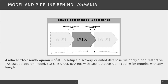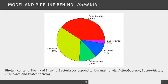A second important point is that there is no assumption about the length of the toxin or antitoxin genes. Tasmania is based on EnsemblBacteria, a repository of annotated assemblies from different sources. The genomes in the database correspond to four main phyla: proteobacteria, firmicutes, actinobacteria, and bacteroidetes. This may have an impact on the TAS families that can be discovered.